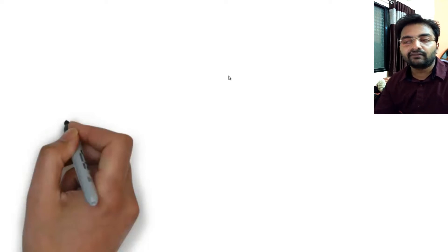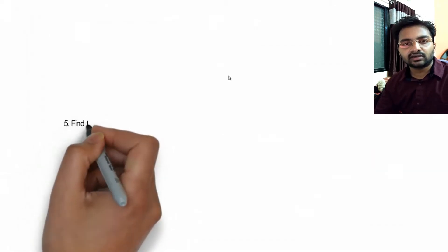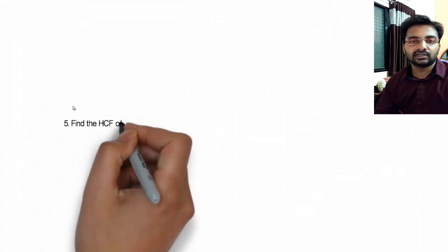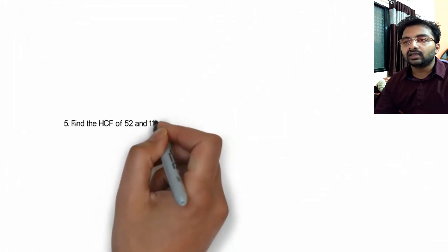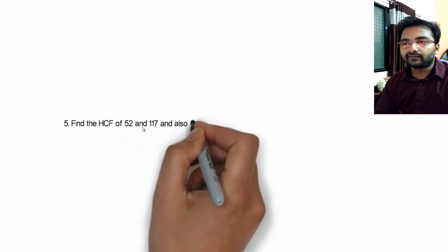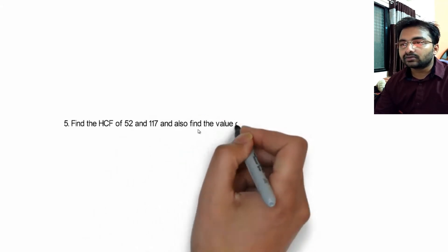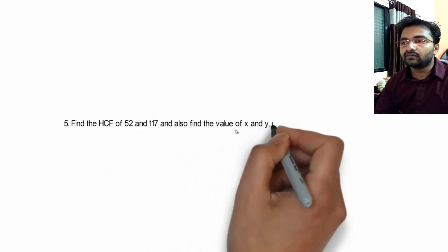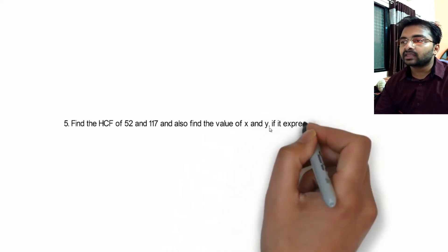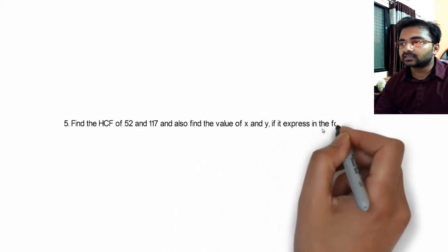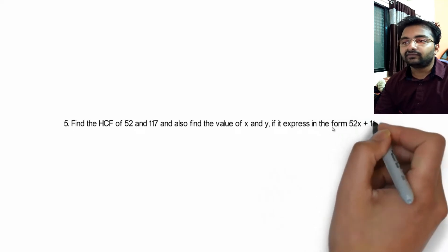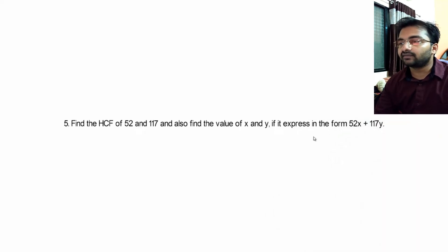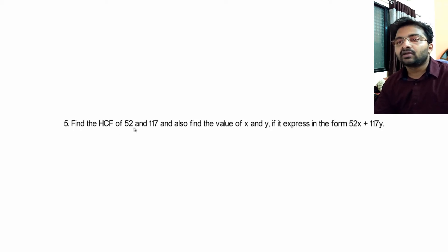Hi students, today we will discuss question number 10 from worksheet number 2. The question is: find the HCF of 52 and 117, and also find the value of x and y if it is expressed in the form 52x + 117y. This question was given to you and it is very simple.